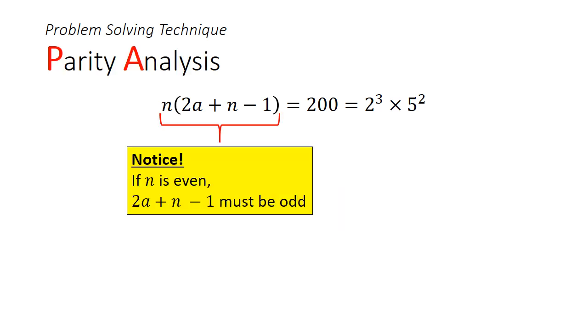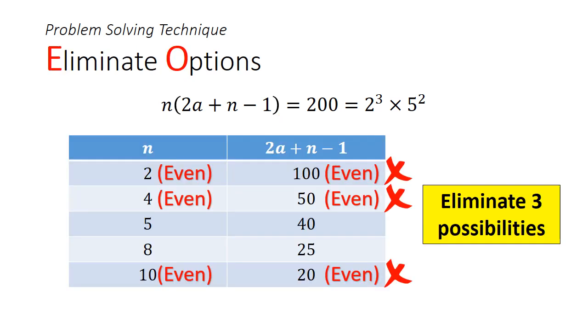Before testing every possibility, we can trim the list down further by noticing that if n is even, 2a plus n minus 1 must be odd. This is because 2a is even, n is even, and 1 is odd. This observation allows us to immediately eliminate three possibilities, leaving us only two possible sequences to check out.